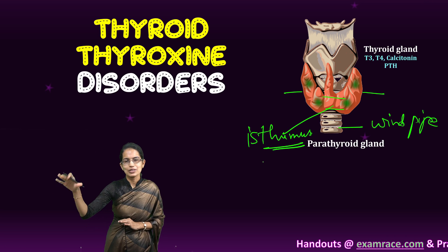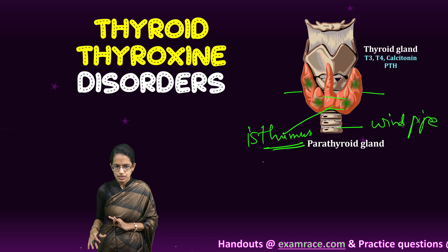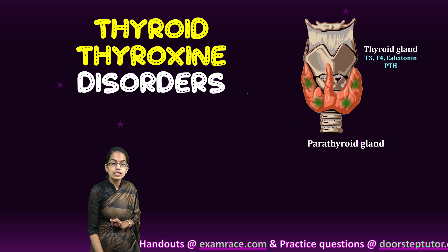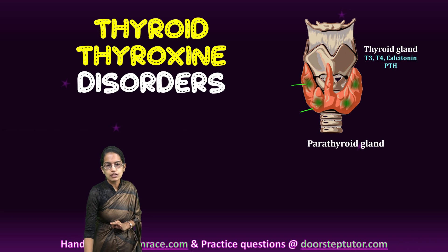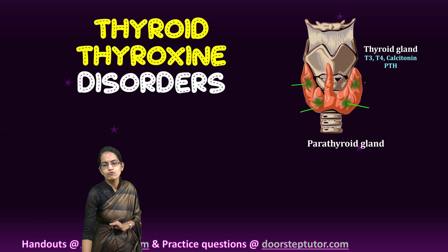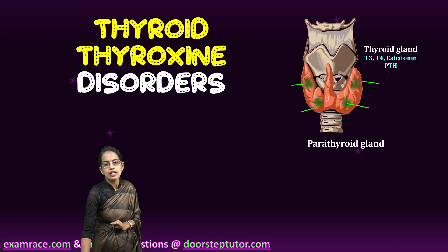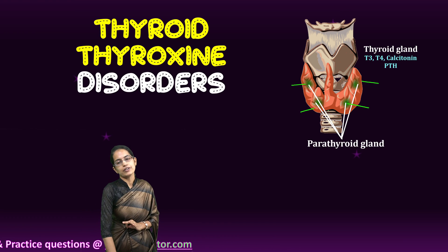The two lobes of the thyroid are connected by the isthmus, and on each side of the thyroid you can see four green dots — these are the parathyroid glands, located on either side of the thyroid gland.